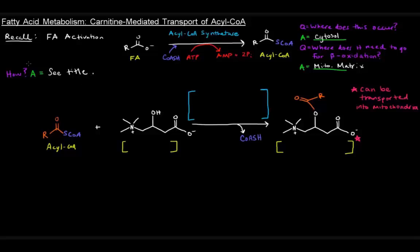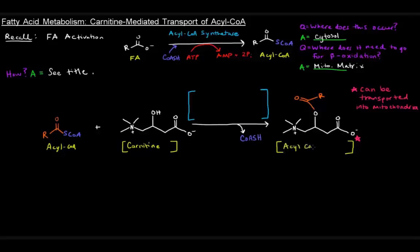Carnitine is an amino acid — not an alpha amino acid like the ones we've learned before, but it qualifies as an amino acid because it has both an amino group and a carboxylic acid group. What needs to happen is the acyl portion of the acyl-CoA gets attached to the hydroxyl group of carnitine to yield a molecule called, creatively enough, acyl-carnitine. Once acyl-carnitine is created, it can be transported into the mitochondria.